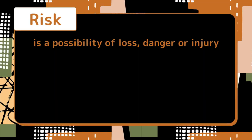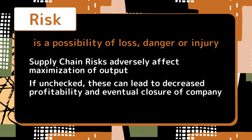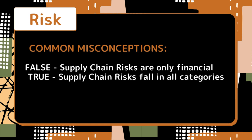No one wants to face risks, but what does it really mean? Risk is a possibility of loss, danger, or injury. Supply chain risks include chances of not gaining our desired level of output also. If these remain unchecked, then a lot of unwanted losses or disruptions can occur, which decrease profitability and can even lead to closure of a company. The most common misconception is limiting them to financial risks, whereas a big variety of risks exist around every business and the majority of them are not in our control.